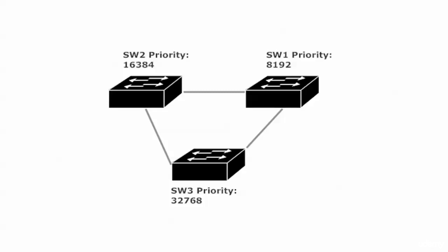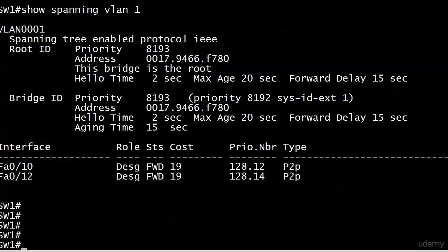It is time to take a look at root guard in both theory and in action. Between videos I did a write erase on all three switches and also ran 'delete vlan.dat' to make sure all VLAN information is gone. When the switches came back up I changed the priority for two of them for VLAN 1 only. Switch 1 has a priority of 8192, Switch 2 a priority of 16384, and Switch 3 we left at 32768.